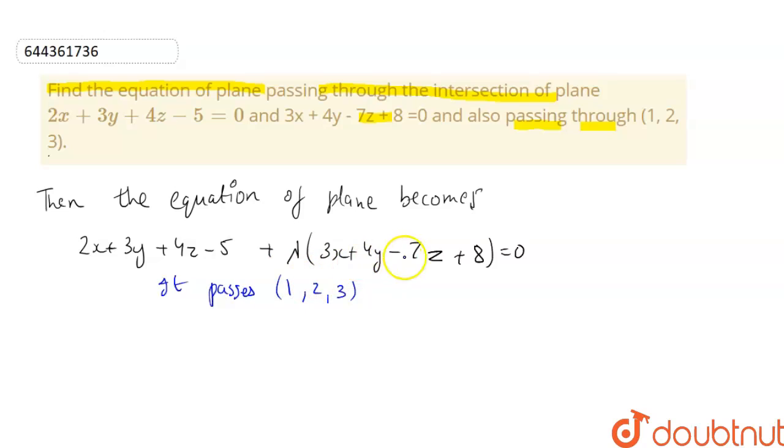So we can put the values of x, y and z as 1, 2 and 3 respectively. So this becomes 2,